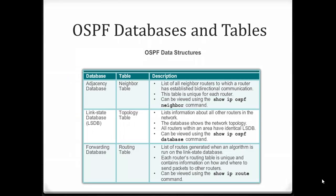OSPF keeps track of many different databases and tables, which makes it a bit more complex than RIP. Some of the databases you need to know about are: the adjacency database, which is our neighbor table. This lists all of the neighbors to which a router has established bi-directional communication. This table is unique for every router since every router in an OSPF domain will have different directly connected neighbors. To view your neighbors, you can use the show ip ospf neighbor command.